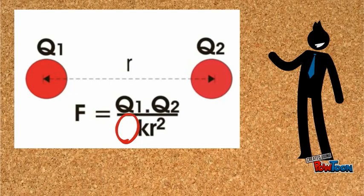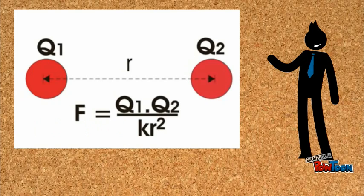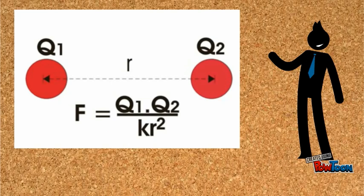Finally, we can say that force F equals Q1 into Q2 divided by K into R squared. This is nothing but the expression of Coulomb's law.